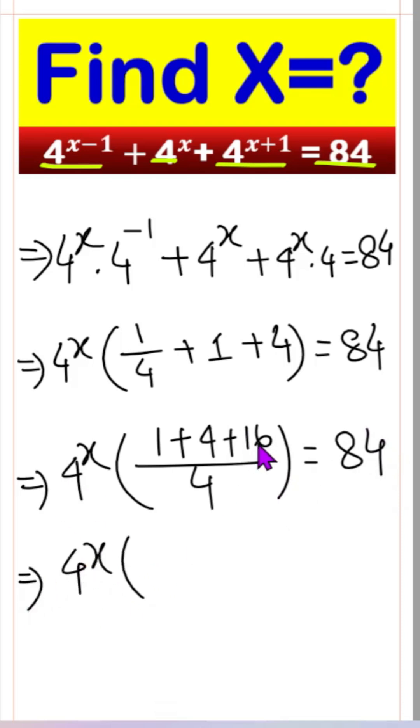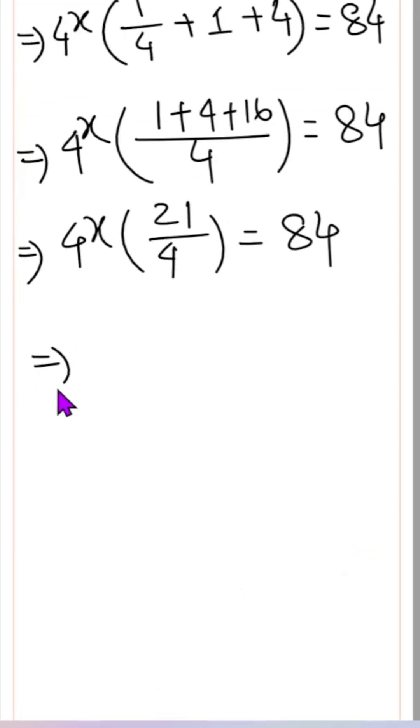So 16 plus 4 is 20, 20 plus 1 is 21. 21 by 4 equals 84. Then 4 to the power x equals 84 times 4 by 21.